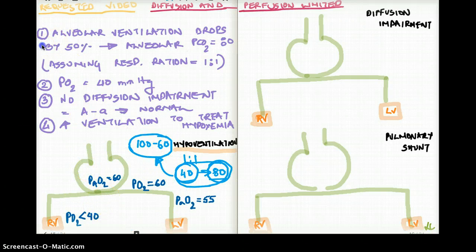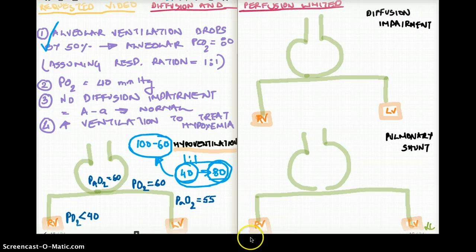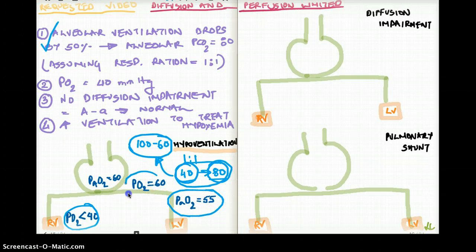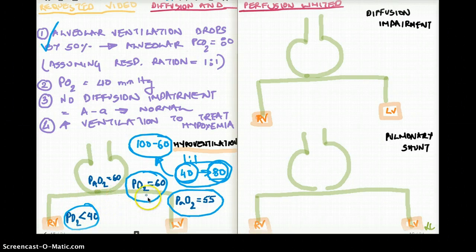In a hypoventilation state, the oxygen level in all the vessels is going to decrease — in the pulmonary artery, the pulmonary vein, and the capillaries. You might think the oxygen in the pulmonary artery wouldn't decrease because it hasn't reached the lungs yet, but you have to understand this is a system — it goes around in circles. So everything is going to be decreased in hypoventilation.